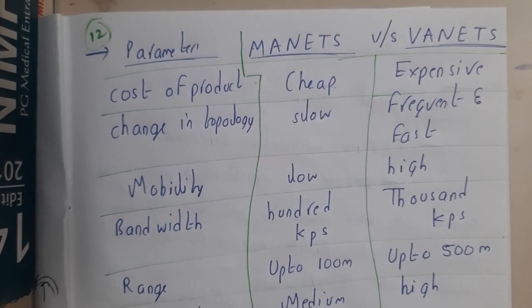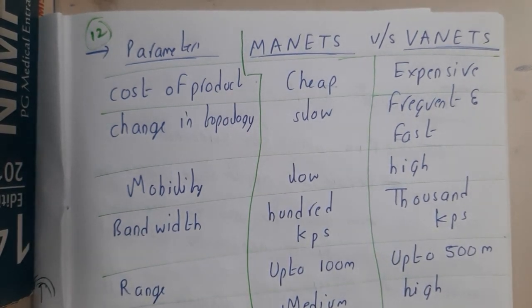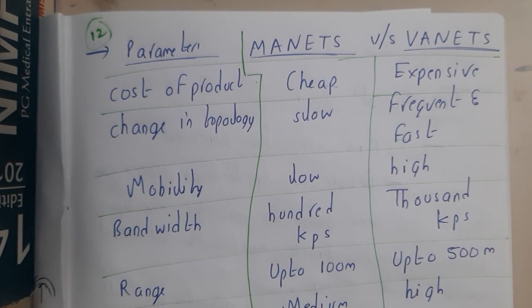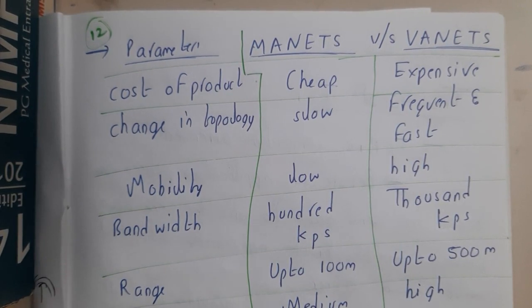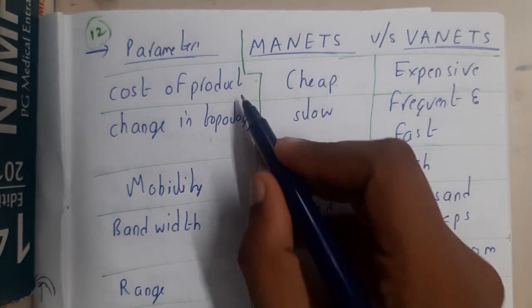Hello guys, we are back with our next lecture. In this lecture, let us go through the differences between MANETs and VANETs. MANETs refer to mobile devices, whereas VANETs refer to vehicles.